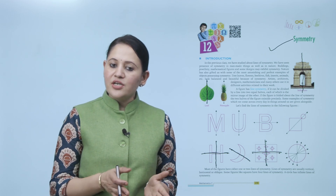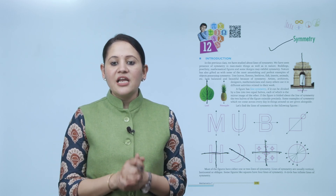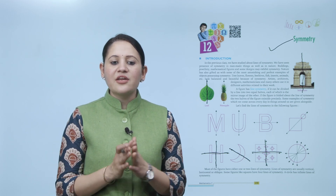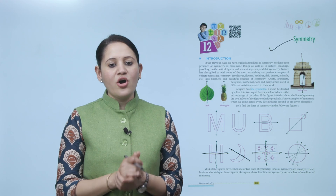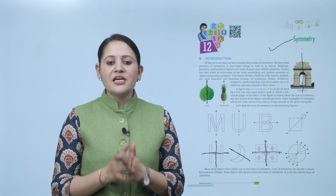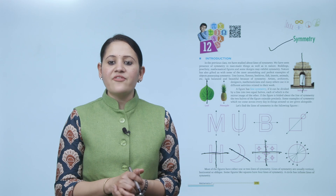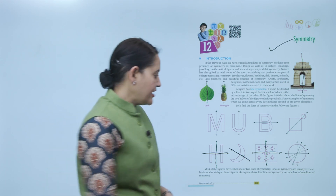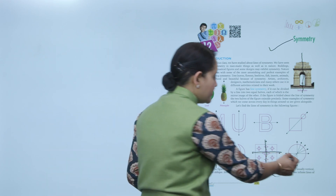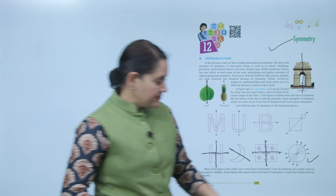Most figures have either one or two lines of symmetry. Lines of symmetry are usually vertical, horizontal, or oblique. Some figures like a square have four lines of symmetry. A circle has infinite lines of symmetry.